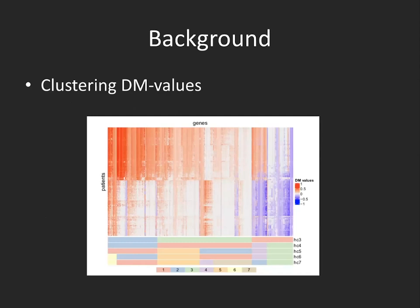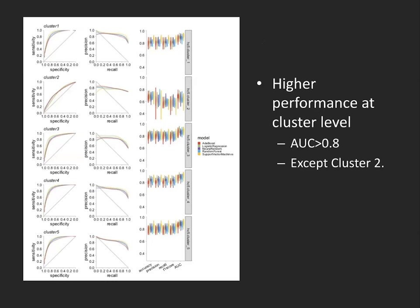We also investigated whether clustering the methylation data improved results, because we don't necessarily expect to predict each single gene from image data. We clustered the genes and defined different subtypes, and based on internal statistics, the solution with five clusters gave the best results. We then tried to predict each of these five methylation clusters using morphometric features. Only cluster two did not perform well; all other clusters had quite good performance with AUCs above 0.8, and classifiers behaved similarly across all clusters.